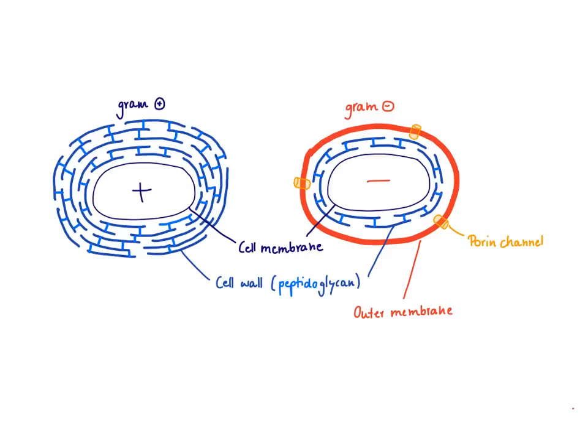These porin channels let in only very small substances. So if you see a very bulky, large antibiotic structure, you'll know it's never going to get into a gram-negative bacterium. This helps you predict the spectrum of activity of an antibiotic. This concludes the general introduction to antibiotics.